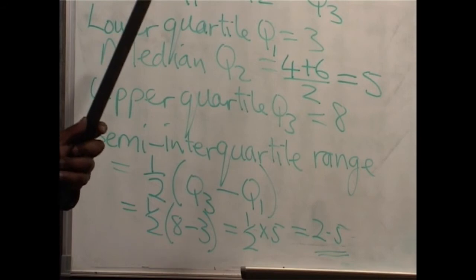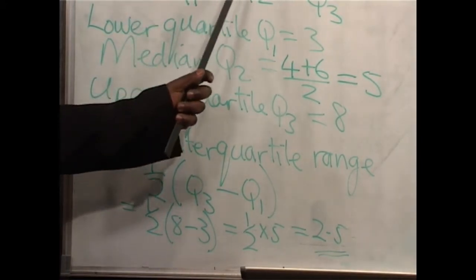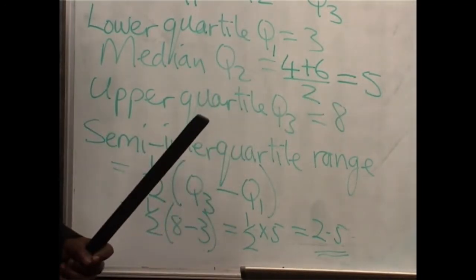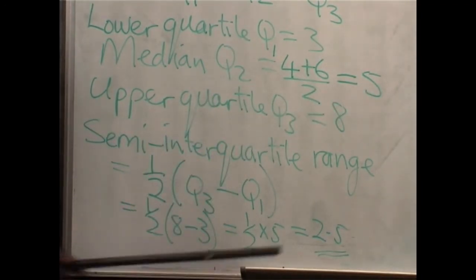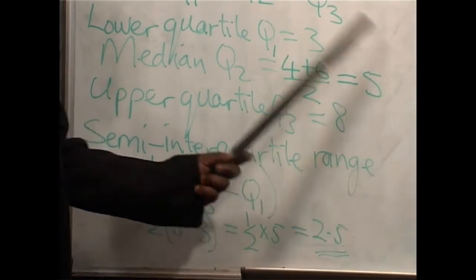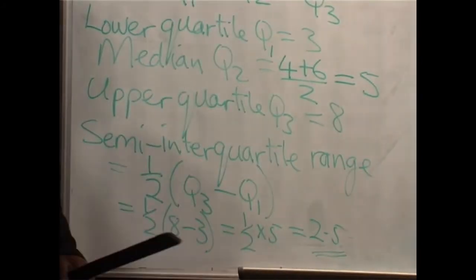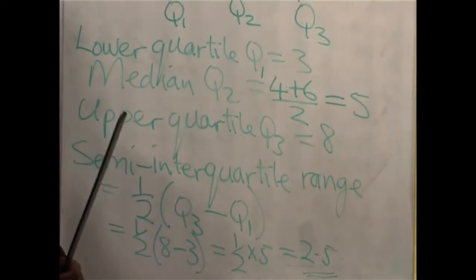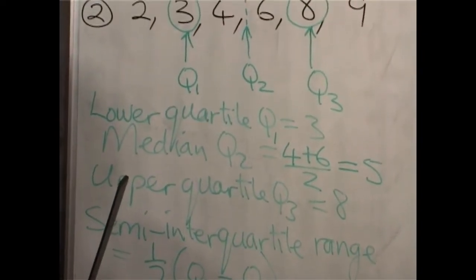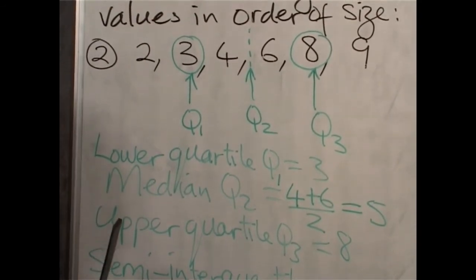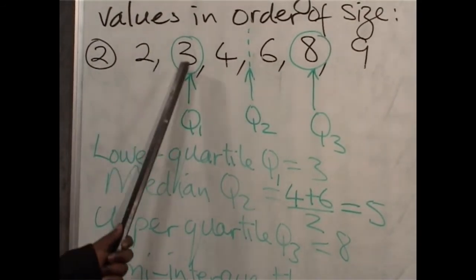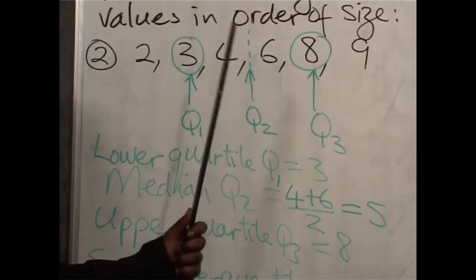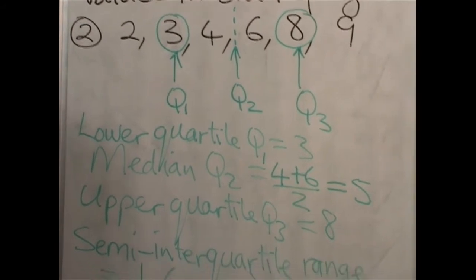When the median is not there, take the two middle numbers, find the average, and that will be the median. There are certain questions where you pick all three straight away. In our second example, we found the median by finding the average. Other questions require you to calculate each of the three — Q1, Q2, and Q3. We shall see this in our third example.